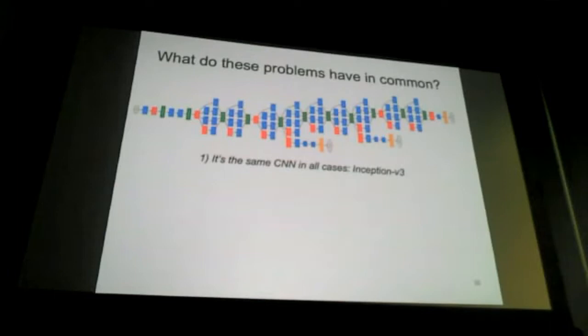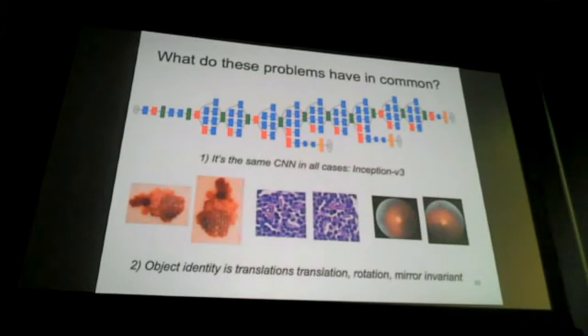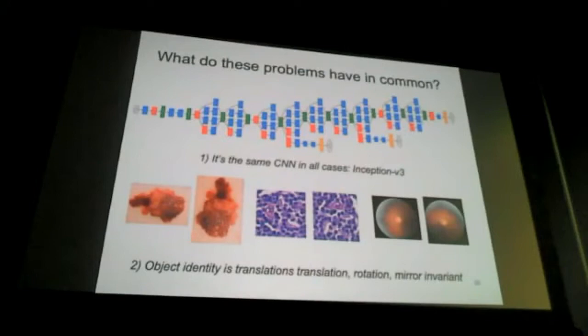It's surprising that you can transfer models across very different domains — start from one domain, move to another, and with a bit of fine-tuning, make them work really well. Another interesting aspect is that this domain is actually rotation invariant. If you rotate a skin lesion, a pathology slide, or a retinal image, it's basically the same. That's an inductive bias — an insight — that the deep neural net is not using.